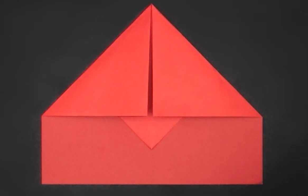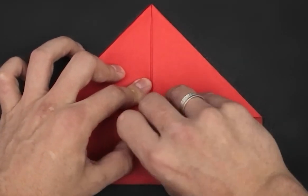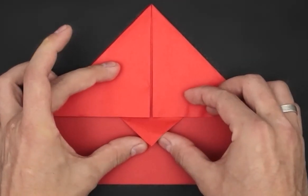Here in the center we have a small triangle. Let's fold this triangle over the two previous folds, thus locking the paper in place.